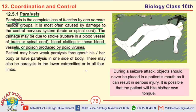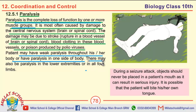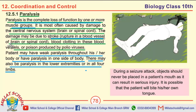Moving towards the important MCQs, the first is taken from the definition of paralysis: paralysis is the complete loss of function by one or more muscle groups. A patient may have weak paralysis throughout the body or paralysis on one side of the body. There may be paralysis in the lower extremities or in all four limbs. This paragraph also contains the short question: define stroke. Stroke is the rupture in a blood vessel of the brain or spinal cord.